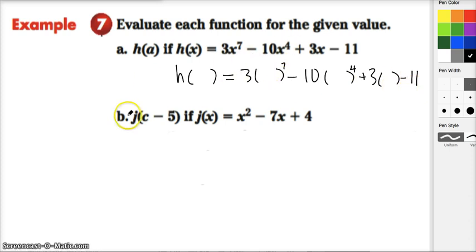So notice I just have blanks where the x's are, so that when I'm asked about something like h of a, I put the a in for all the blanks. And literally, that's all you have to do. I know it seems silly, but that's what you're asked to do, and so you can do that. So h of a is equal to 3a^7 - 10a^4 + 3a - 11. And literally, we're done. I don't have to write any more here, and I could take the parentheses off if I wanted to, but that's not a problem. I'm going to leave it here. This is the answer.